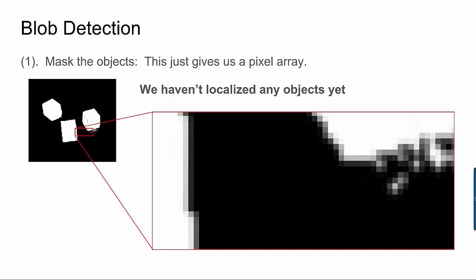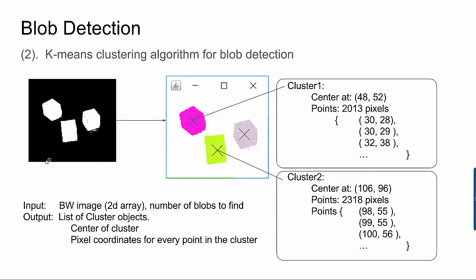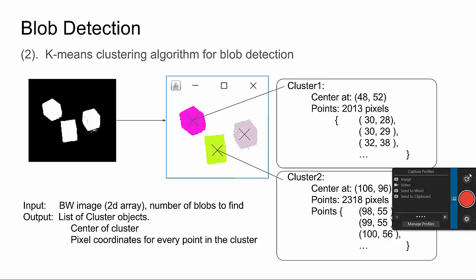To the computer, it's just a two-dimensional array of pixel values, and who's to say that this pixel right here is supposed to be associated with this blob and not that blob? So the goal of this algorithm is the input is a two-dimensional black-and-white image,